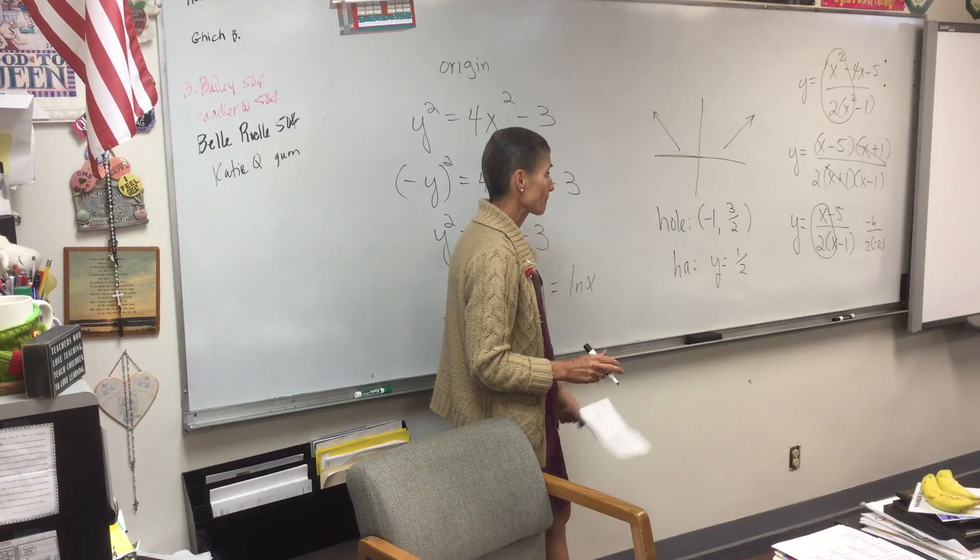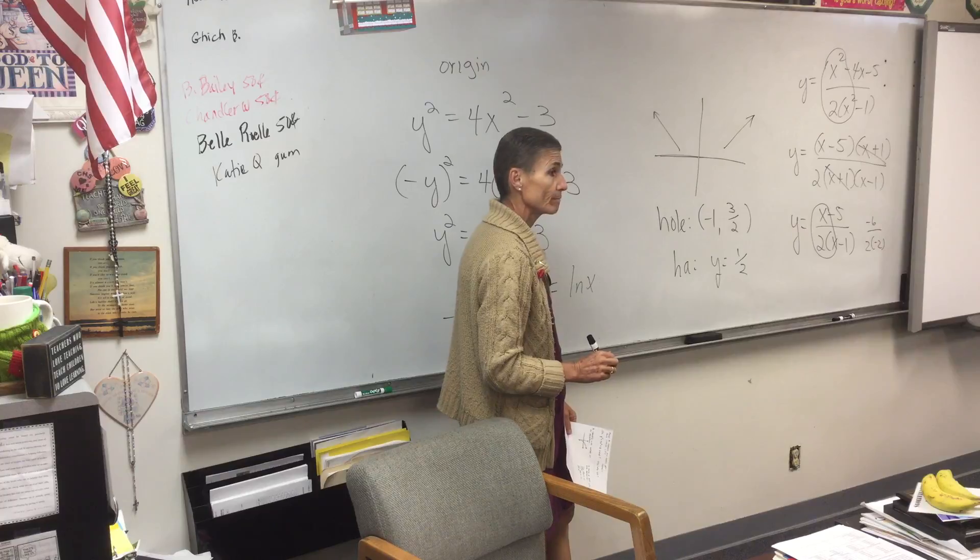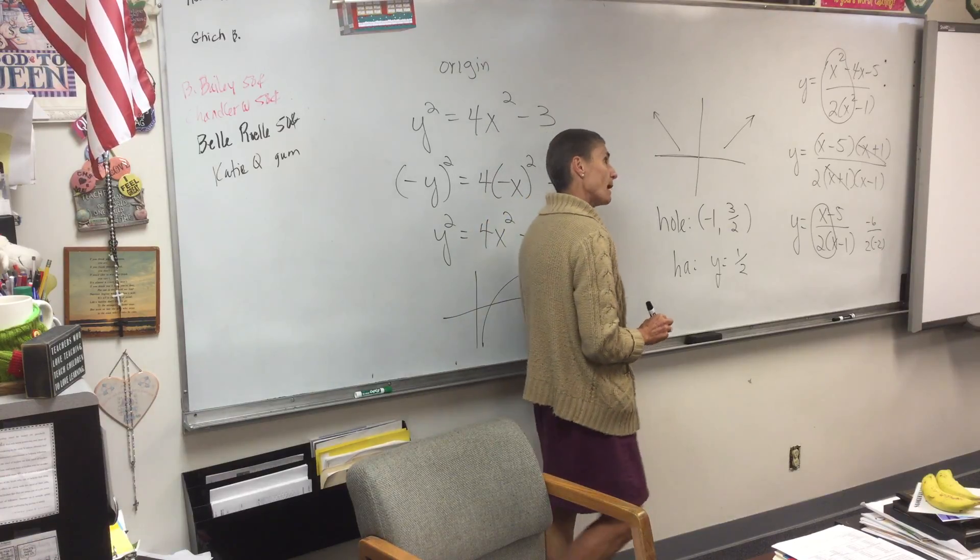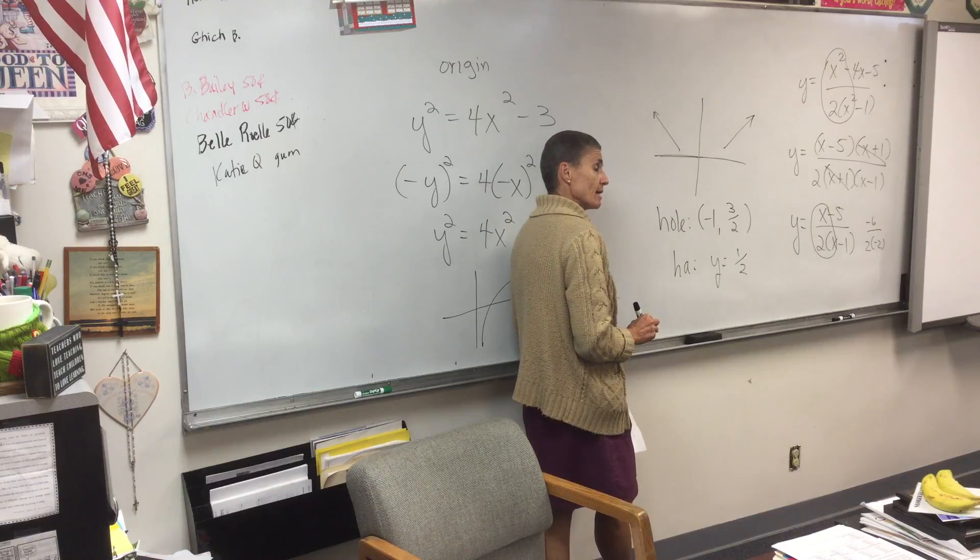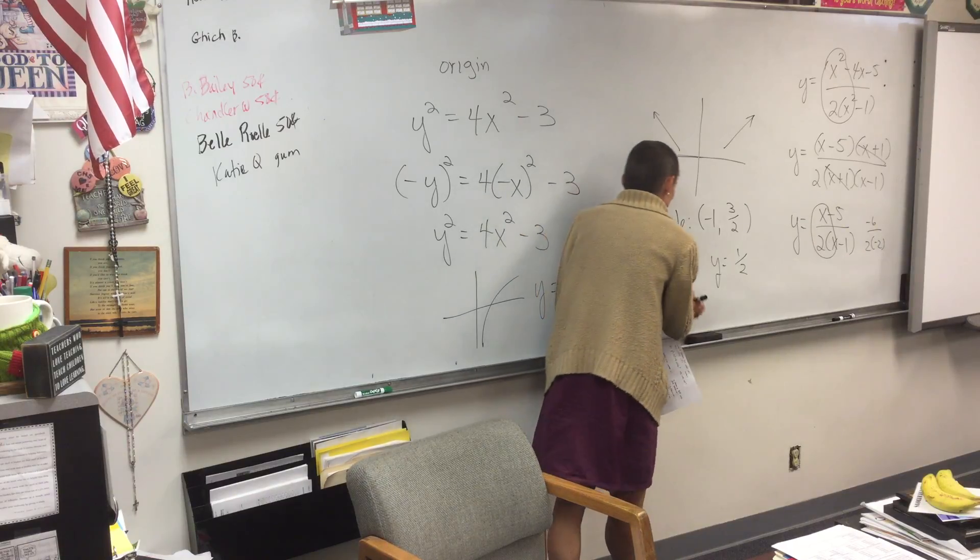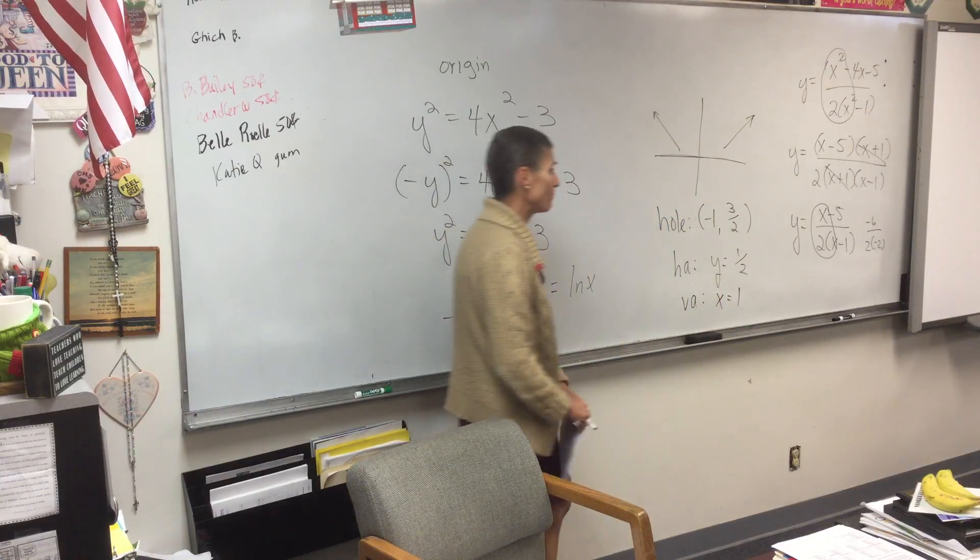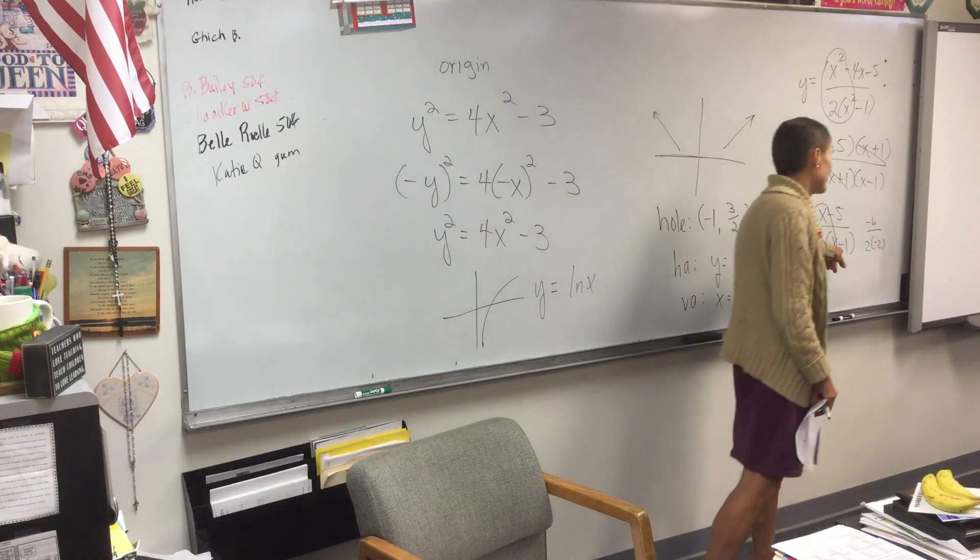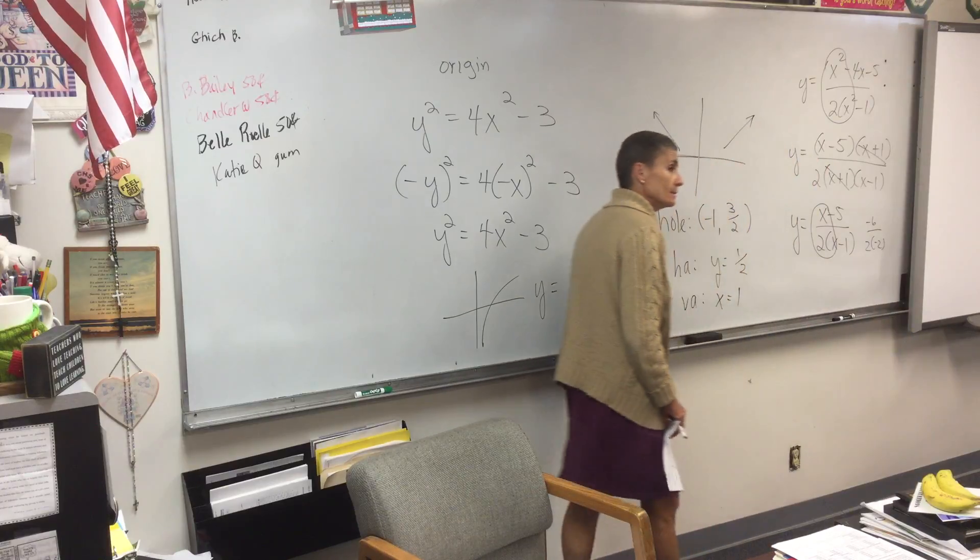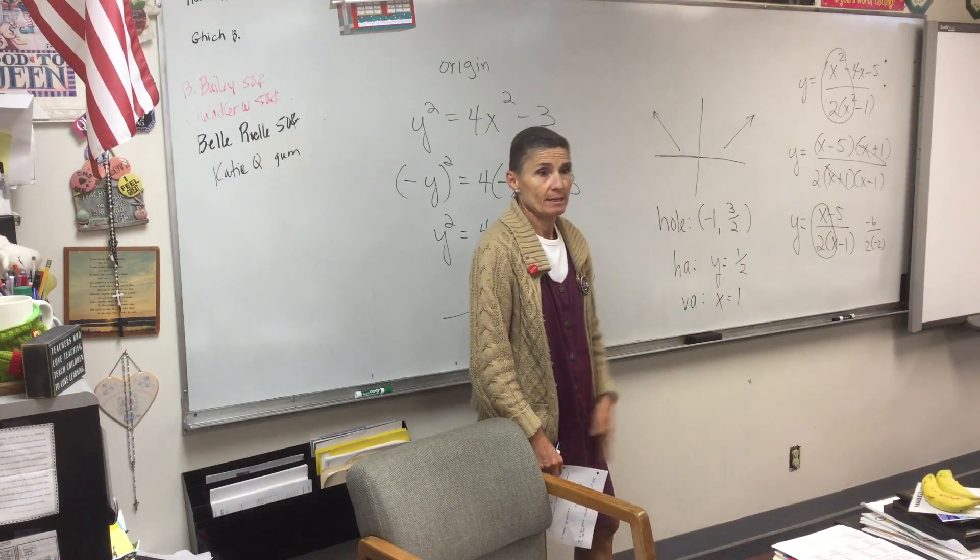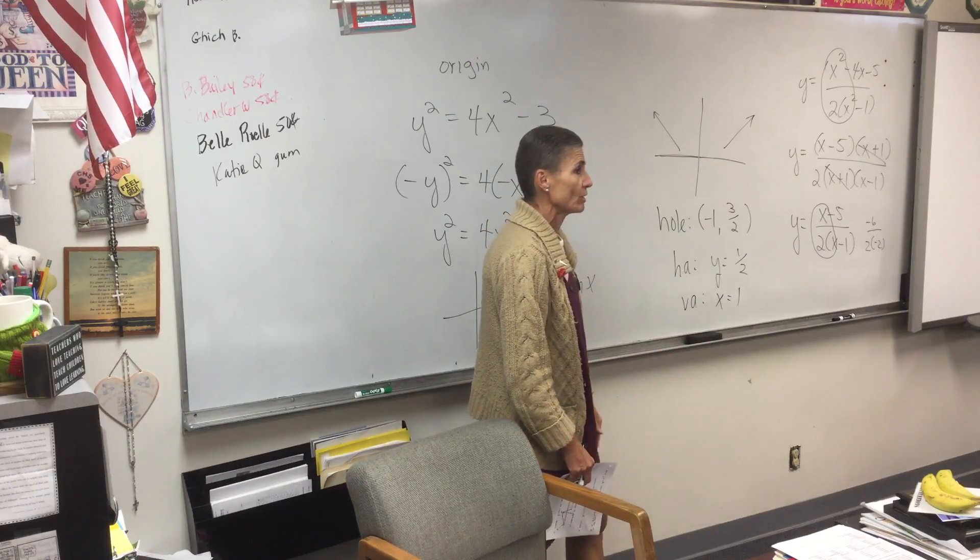How about vertical asymptotes? Do we have any verticals? Where? Well, X minus one is not an equation. What's the equation for the vertical asymptote? X equals one. Because what happens if you put one into your problem? You get a zero. X cannot be one. And a cannot be is a vertical asymptote.